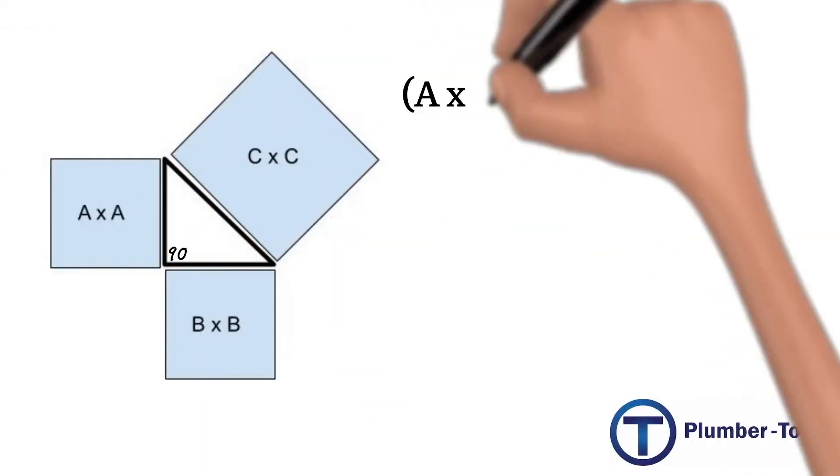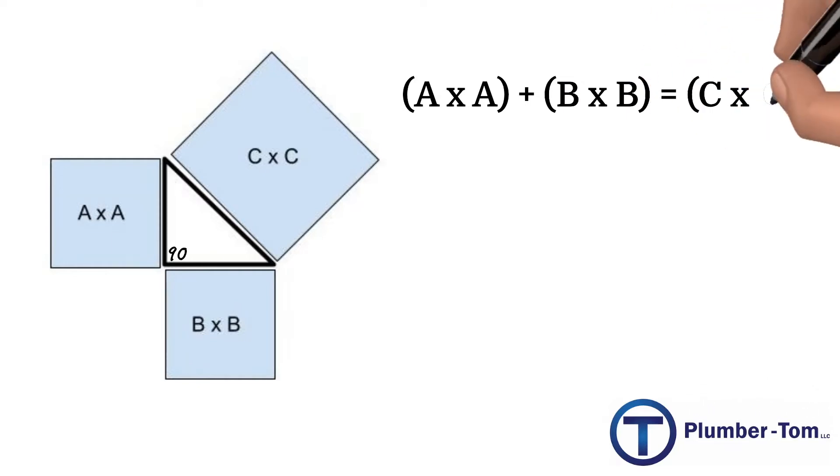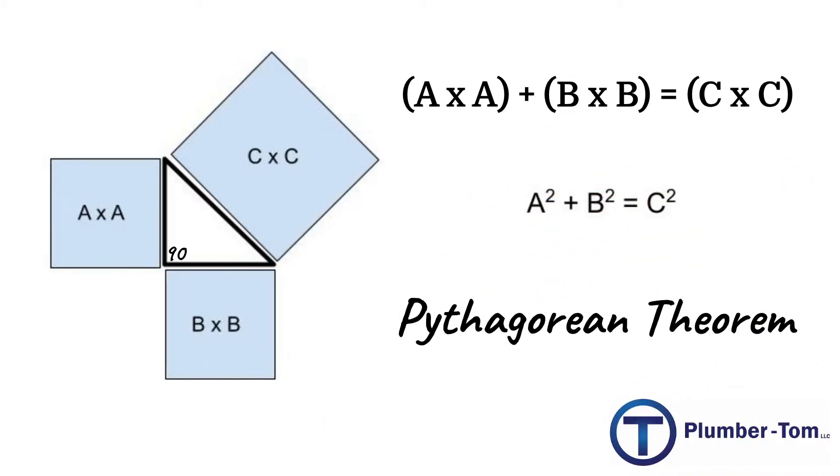For a triangle with sides a, b, and c this relationship can be written in a formula. a times a plus b times b equals c times c or in other words a squared plus b squared equals c squared. We refer to this as the Pythagorean theorem.